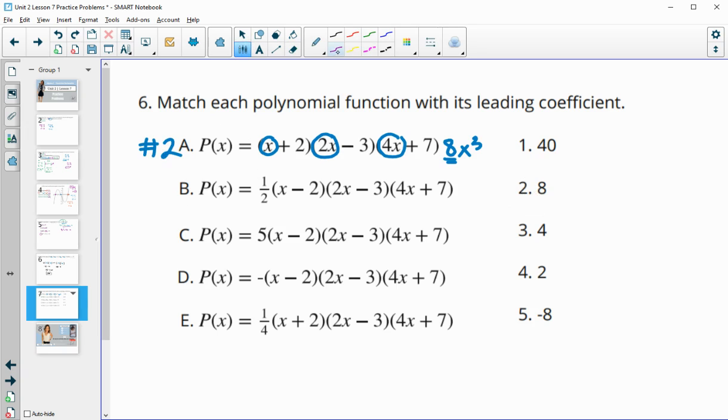For B, we're going to do 1 half times 1 times 2 times 4. This will give us our leading coefficient. 1 half times 2 is 1 times 4 is 4. So our leading term would be 4x cubed. Our leading coefficient would just be the 4, and we can see that in number 3.